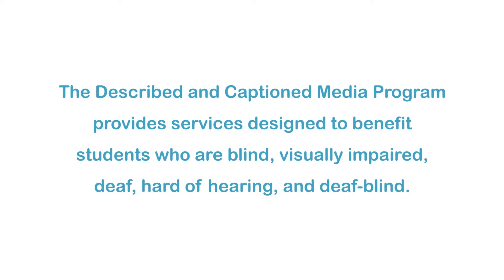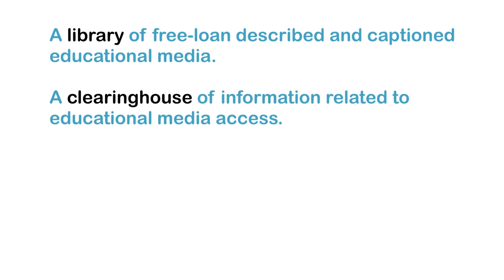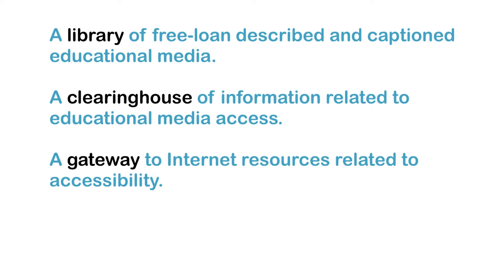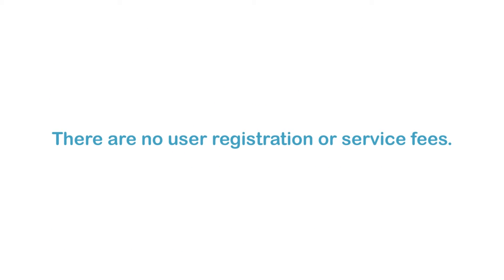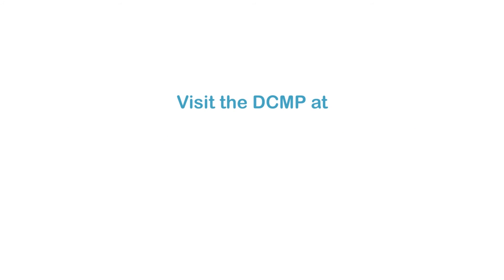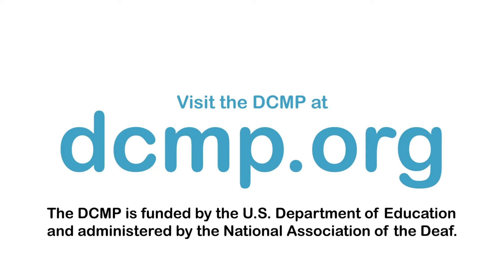The Described and Captioned Media Program provides services designed to benefit students who are blind, visually impaired, deaf, hard-of-hearing, and deaf-blind. These services include a library of free loan described and captioned educational media, a clearinghouse of information related to educational media access, a gateway to Internet resources related to accessibility, and a set of guidelines for adding descriptions and captions to media. The DCMP is funded by the U.S. Department of Education and administered by the National Association of the Deaf.